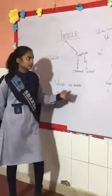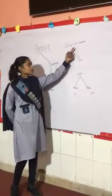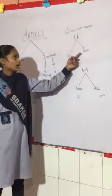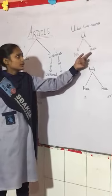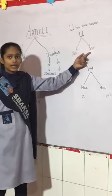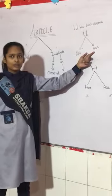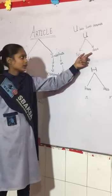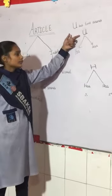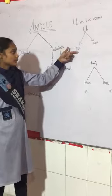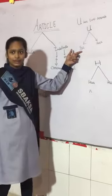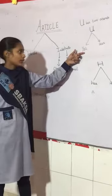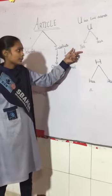What about U? U has two sounds. When U gives the 'uh' sound, it becomes a vowel and we use 'an' there. When U gives the 'yoo' sound, it becomes a consonant.